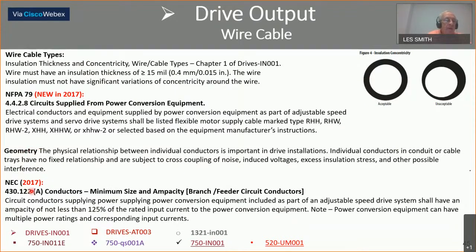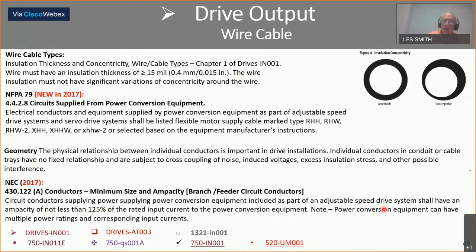NEC 430.122 requires 125% of rated input current for wire sizing. Drives are dual-rated now: for example, you can have a 75 horsepower drive or a 66 horsepower drive from the same unit, depending on whether it's heavy duty or normal duty. I'd recommend reading that on your own to stay up to date on minimum wire sizing specifications.